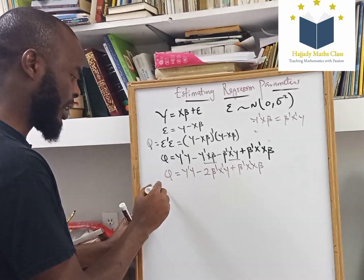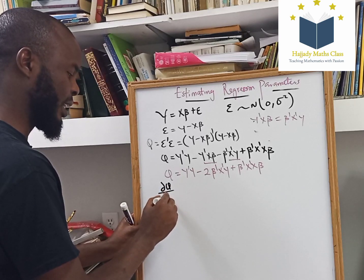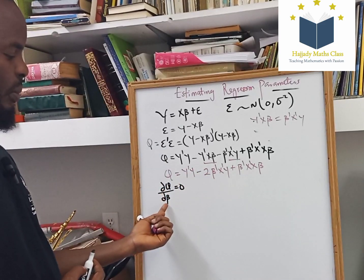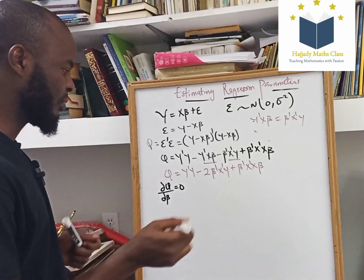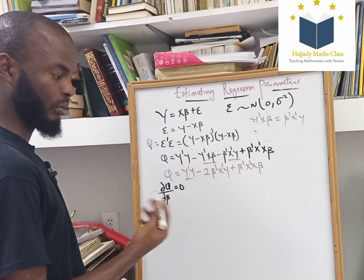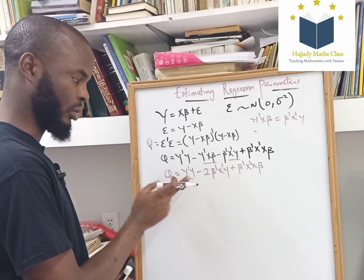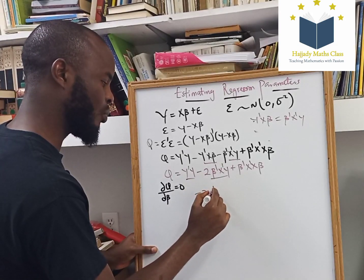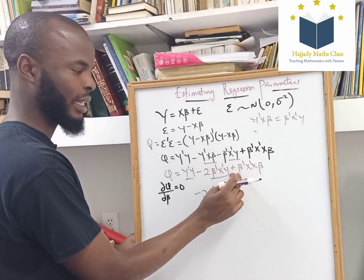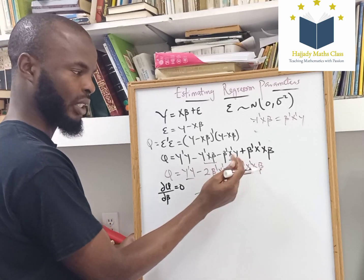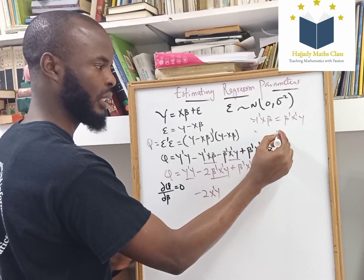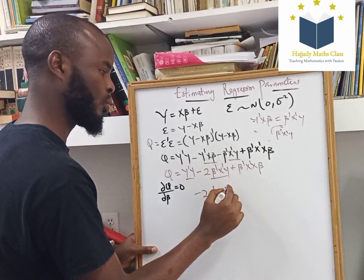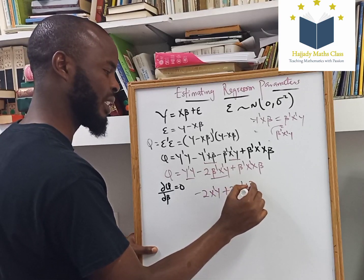So, from this equation, we're going to differentiate with respect to the parameter we want to estimate, which is beta. So, here, I'm having dQ/dβ. I'm going to differentiate Q with respect to beta and equate the answer to zero. Differentiating y-prime y with respect to beta — there is no beta there, so it's zero. Differentiating the second term gives negative 2X-prime y. Differentiating the third term — this is like having beta squared — so we have 2X-prime Xβ equals zero.